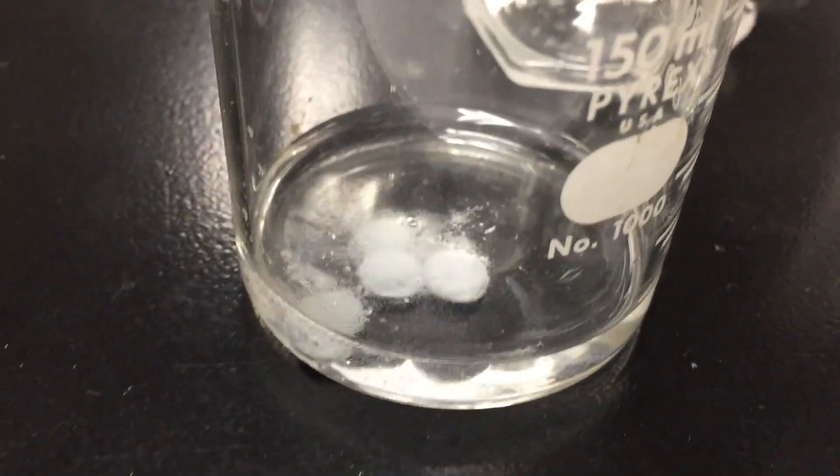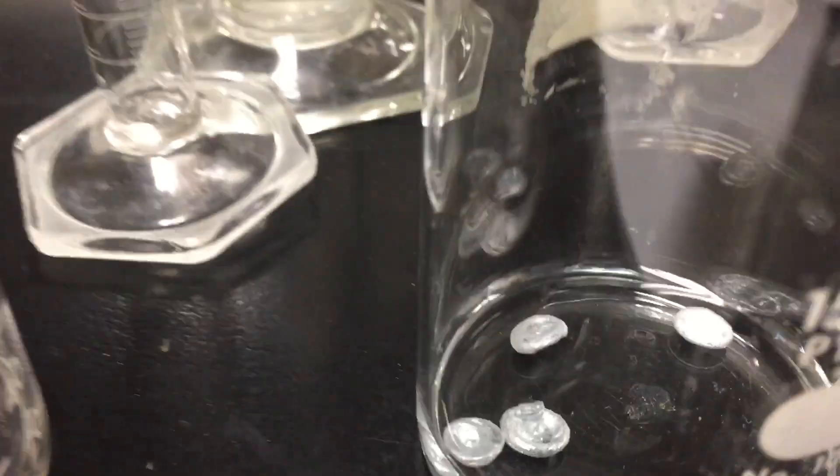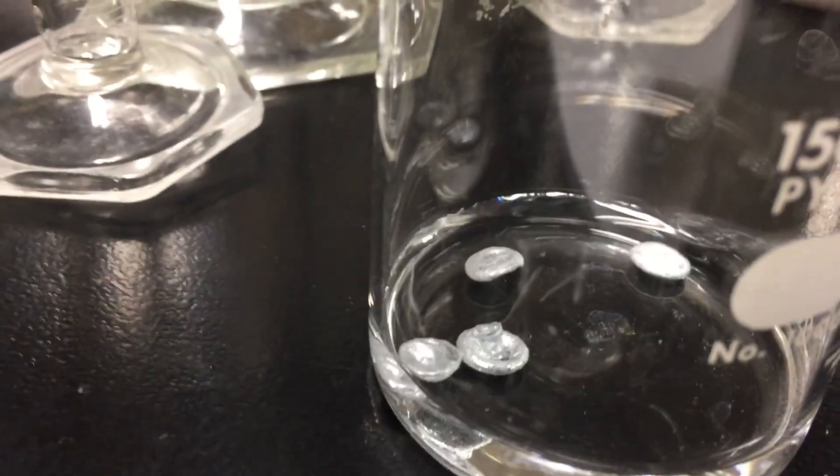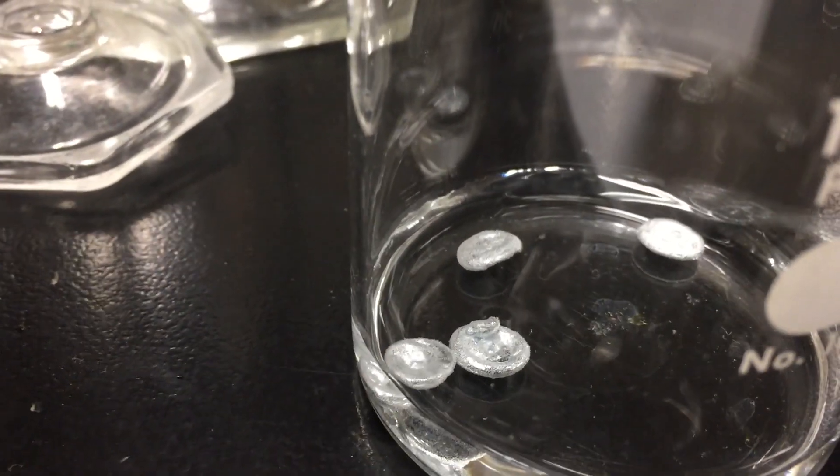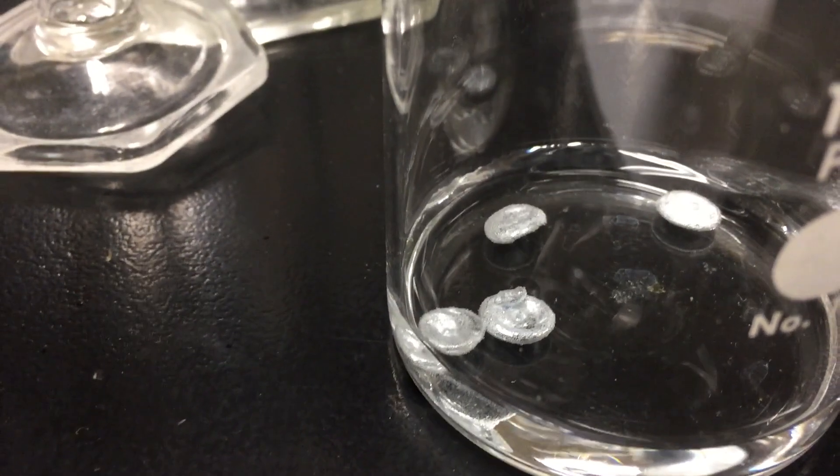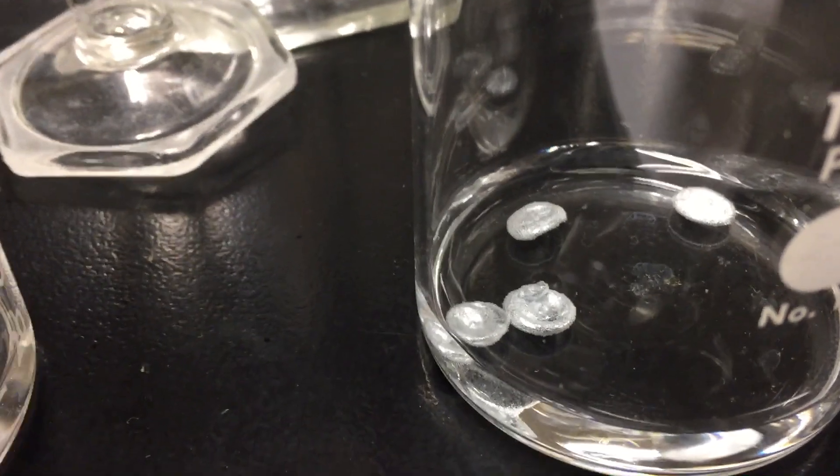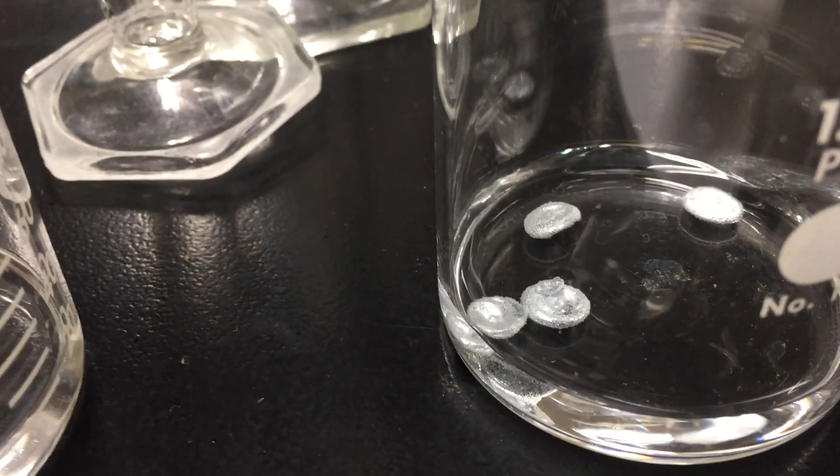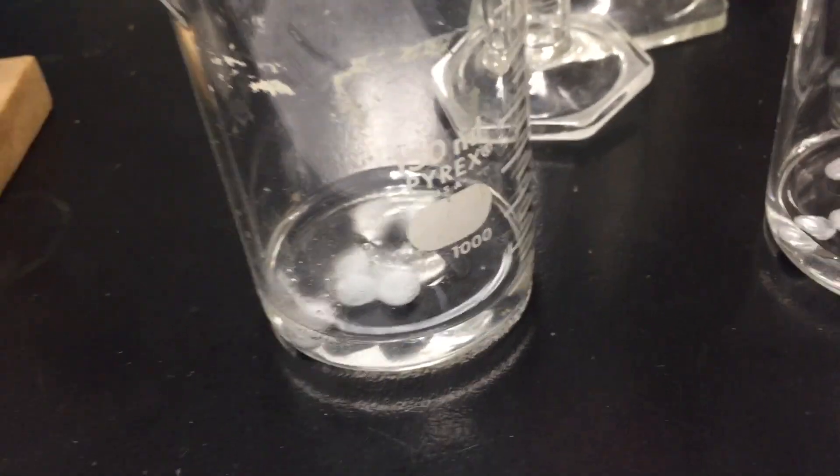So once again, here's the 6 molar reacting with the zinc ingots, and here is the 10-fold dilution, so this is 0.6 molar. And I imagine there's some reaction going on, but it's very slow. So the higher the concentration, the greater chance there will be for meaningful collisions between particles, and therefore, the rate will increase.